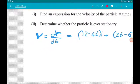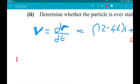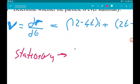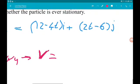So if the particle is stationary, then stationary means that velocity would equal 0. In terms of the vector, we would need v to be 0 i plus 0 j.